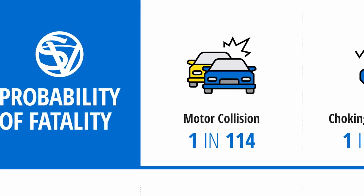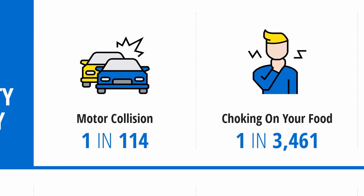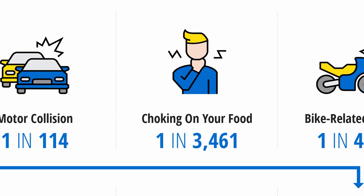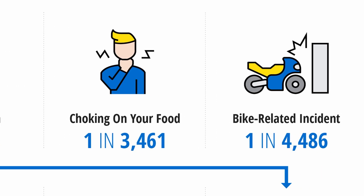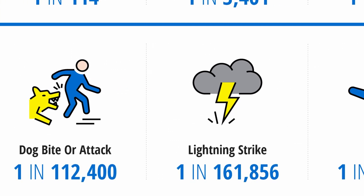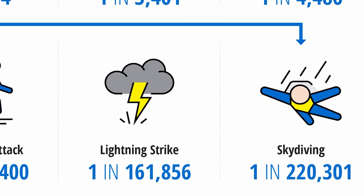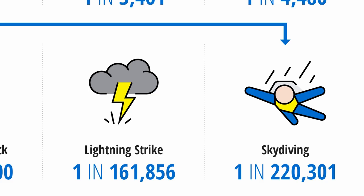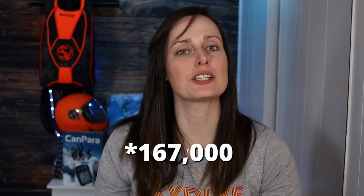Looking at the statistics: the probability of fatality from a motor collision is one in 114; choking on food is one in 3,461; bike-related incidents, contact with a hornet, wasp, or bee, a duck attack, and lightning strike also rank above skydiving. Skydiving comes in at one in 220,300 — a rate of 0.004 fatalities per thousand jumps. You're more likely to die being struck by lightning, so skydiving is extreme but not risky.